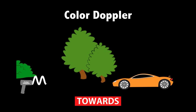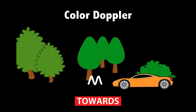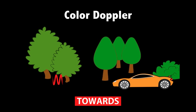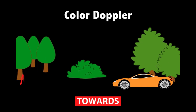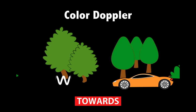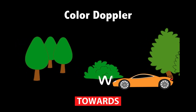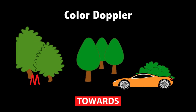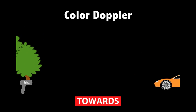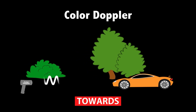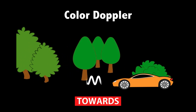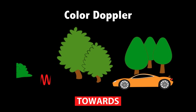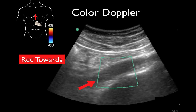Now imagine a car traveling towards us. We shoot an ultrasound beam toward that car, and every subsequent part of the sound wave hits it at a closer point. As it bounces back, those sound waves are compressed, creating a higher frequency return. This is also how cops catch speeding drivers — the ultrasound machine does the same thing, interpreting whether the sound waves have shifted. When we get our red towards, the waves have been compressed to a higher frequency, and the ultrasound machine interprets that as a red color.